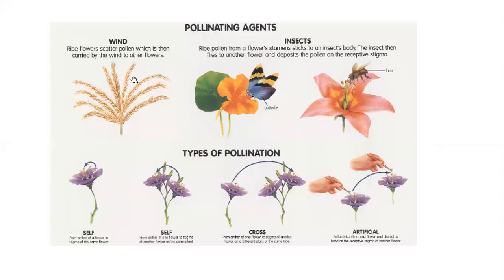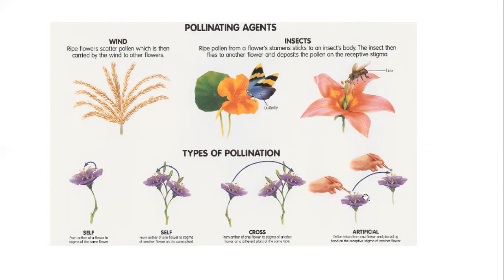It has been explained here that pollination happens through wind and insects. Types of pollination: this is self-pollination in a bisexual flower; this is also self-pollination — same plant with two flowers. If pollen goes from one plant to another plant's flower, then this is cross-pollination. And this is artificial pollination.